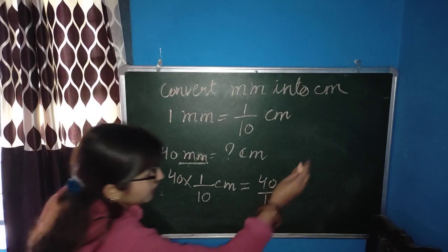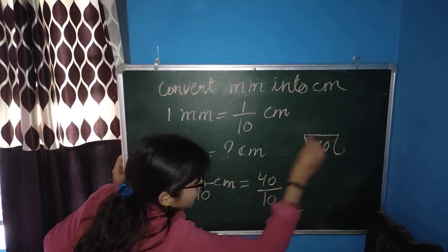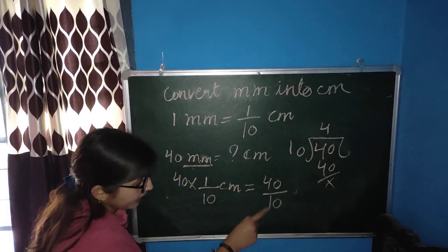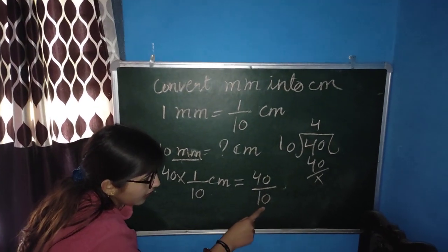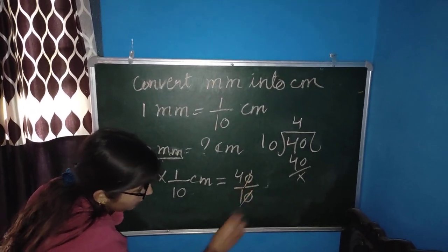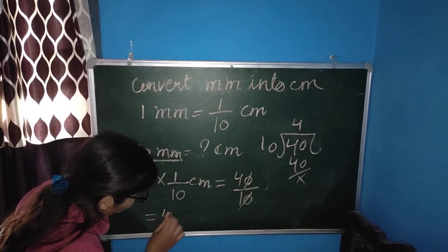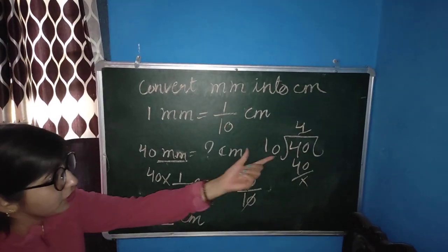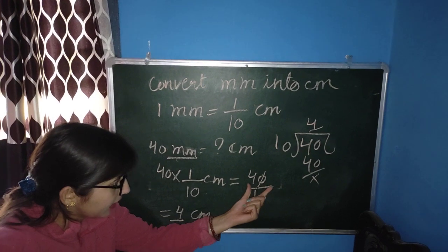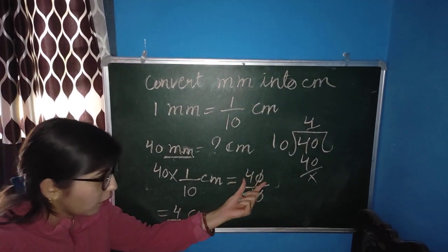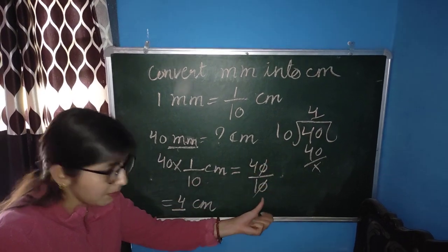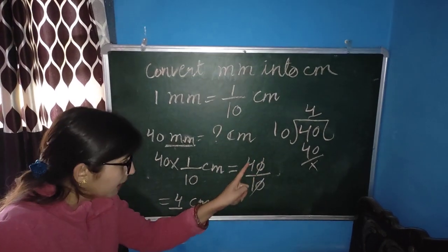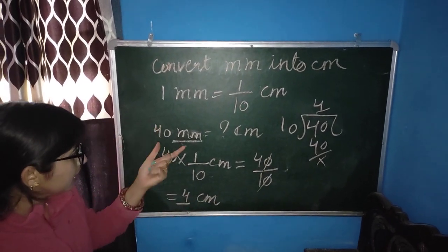We divide 40 by 10. One method is long division: 10 goes into 40 four times. The second method: since we are dividing by 10, we cancel the zero — the first zero cancels the first zero — so we are left with only 4. So the answer is 4 cm. In 40 mm, there are 4 cm.